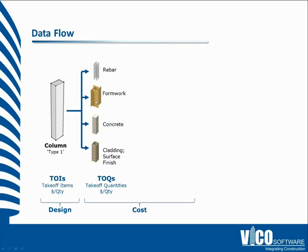For a column, you have to erect the rebar, erect the formwork, pour the concrete, and put on whatever the cladding is. Inside of our system, that's non-graphical data. It's really best represented by the combination of the cost plan and the scheduling plan, but it's designed to be connected to the model. What the model can give you is very accurate information about the number of columns and their properties — for example, the surface area, vertical surface area for formwork and cladding, and volume for the concrete.